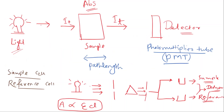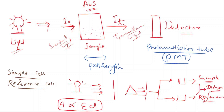So we have a light source, a sample, and the incidence light. This produces transmittance light on one side and absorbance on the other. We then have a detector to measure these values.